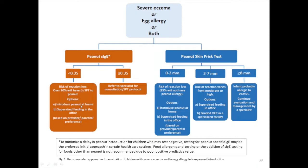A blood test would be ordered in scenarios where skin testing is difficult to access, easily ordered by a primary care physician. However, the Canadian Society was concerned this could lead to panel testing of multiple foods before an infant has ever eaten them — which is not recommended for foods other than peanut due to poor positive predictive value. If the blood test is negative, simply introduce at home. If positive to any degree, refer to a specialist. For skin testing, the guideline says up to seven millimeters warrants an oral food challenge — supervised feeding or a graded food challenge — not automatic labeling of peanut allergy. Only at eight millimeters or above is the infant considered possibly peanut-allergic and prescribed an epinephrine auto-injector.